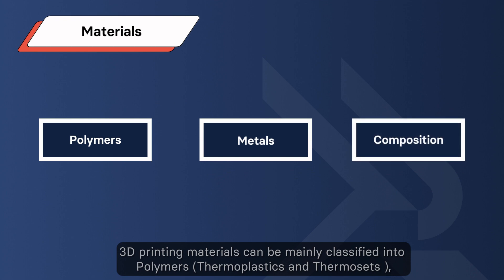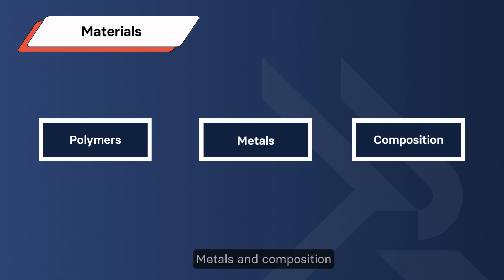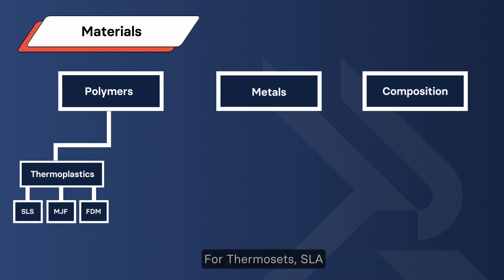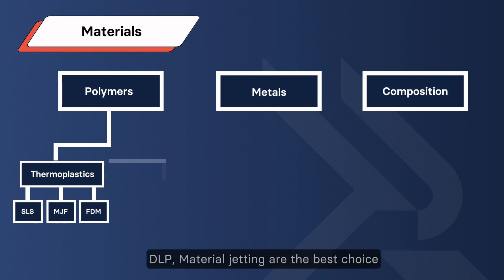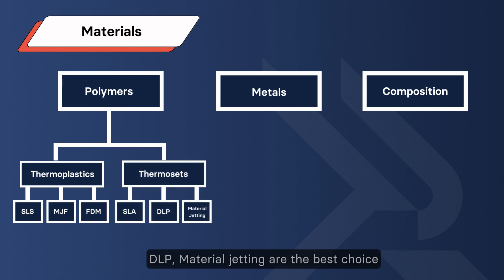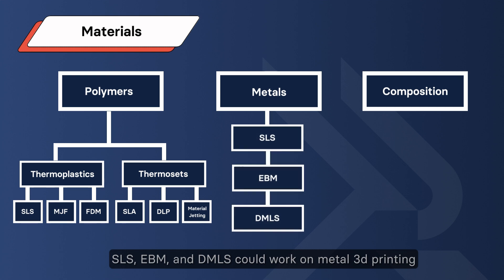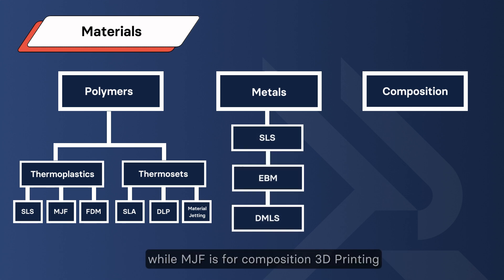Consideration 2: Materials. 3D printing materials can be mainly classified into polymers — thermoplastics and thermosets — metals, and composites. For thermoplastics, SLS, MJF, and FDM are the common technologies. For thermosets, SLA, DLP, and Material Jetting are the best choices. SLS, EBM, and DMLS can work on metal 3D printing, while MJF is used for composite 3D printing.